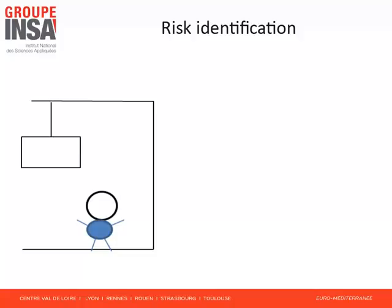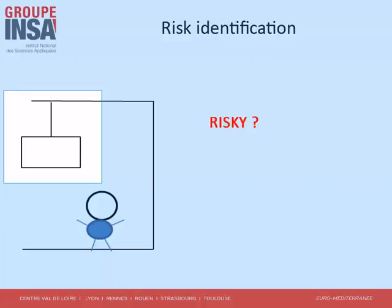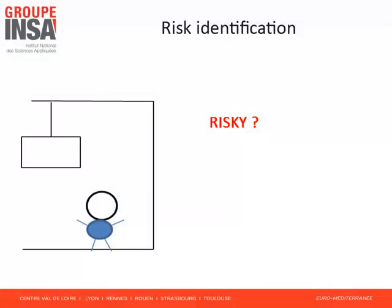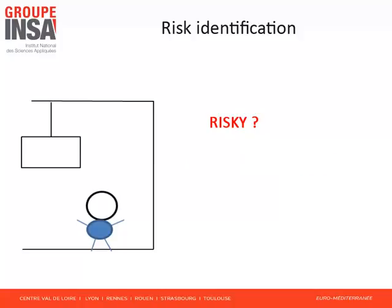Consider the displayed situation: a person is in a garage where a box is hung — that is, the box is suspended above the ground. Is this a risky situation? Yes it is. So let's put on our safety manager hat, study the situation, and see how risks could be controlled. This raises the question: how to deal with the situation, and how can this activity be formalized as a risk management process reusable to handle other risky situations?